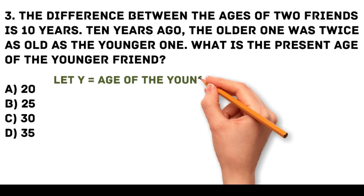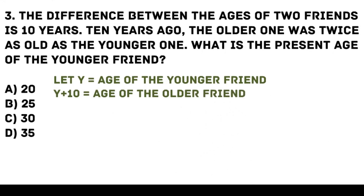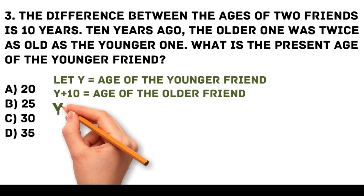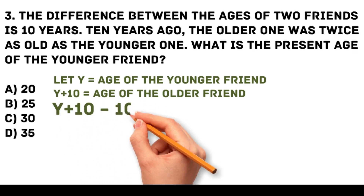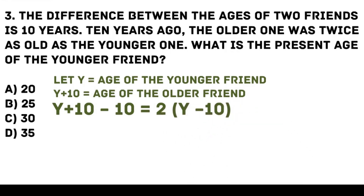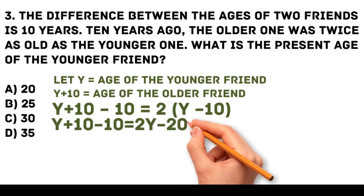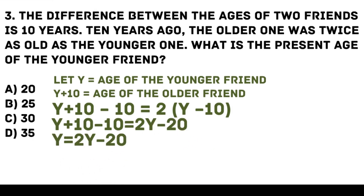Let y be the age of the younger friend, then y plus 10 is the age of the older friend. From the given, 10 years ago the older one was twice as old as the younger one, so: (y plus 10) minus 10 equals 2 times (y minus 10). By distribution: y equals 2y minus 20, combining terms gives y equals 20. The answer is a.